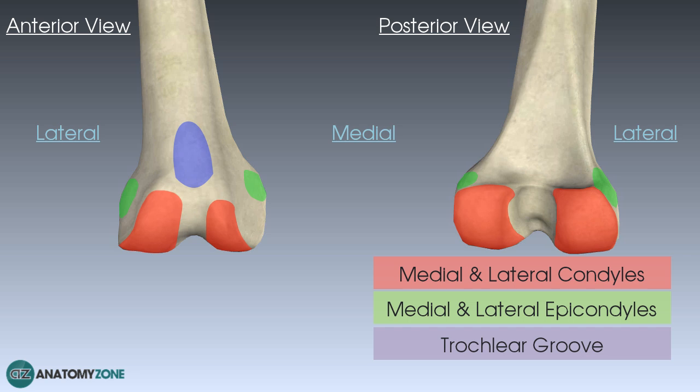Finally, on the posterior view there is an intercondylar fossa, which is a depression between the two femoral condyles. This provides the attachment points for the anterior and posterior cruciate ligaments.